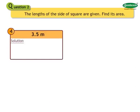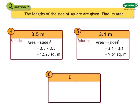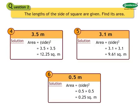Number 4: 3.5 meters. Solution: Area equals 3.5 into 3.5 equals 12.25 square meters. Number 5: 3.1 meters. Solution: Area equals 3.1 into 3.1 equals 9.61 square meters. Number 6: 0.5 meters. Solution: Area equals 0.5 into 0.5 equals 0.25 square meters.